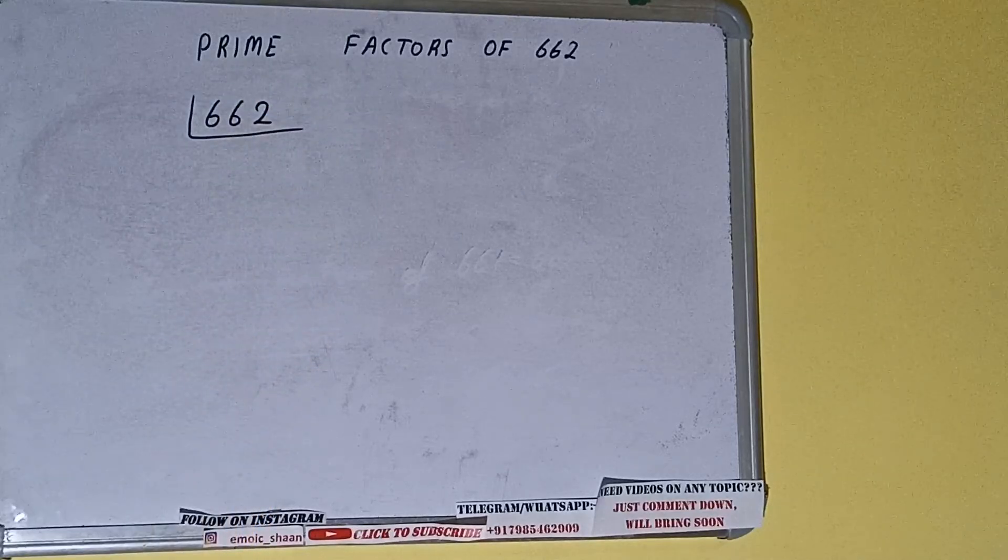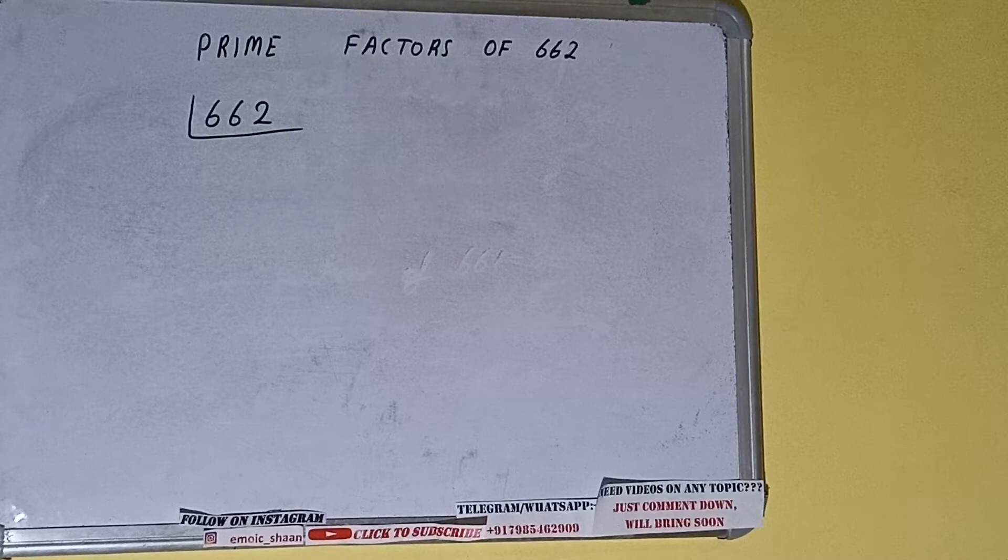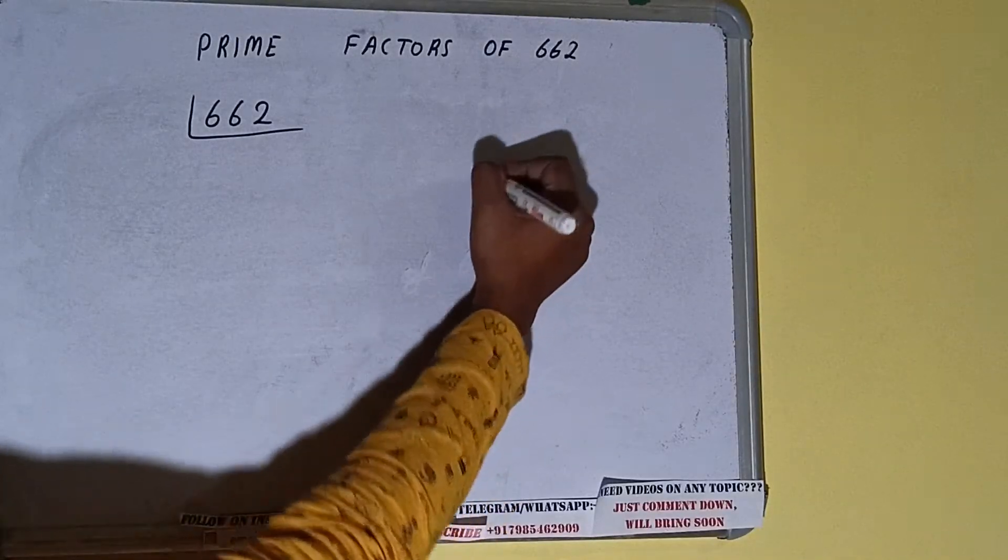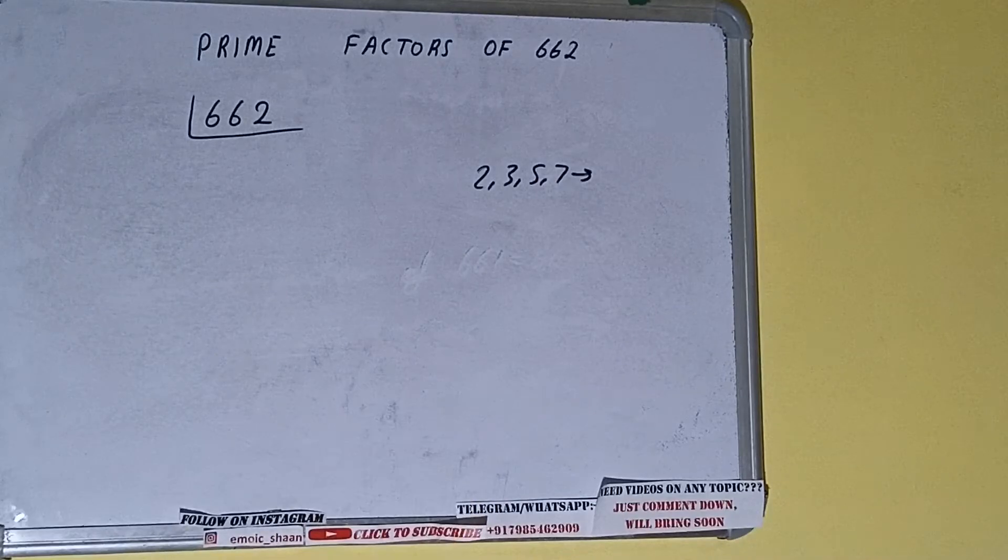The next thing we need to know about is what are prime numbers. So prime numbers are numbers that are divisible by 1 and the number itself, like 2, 3, 5, 7 and so on.